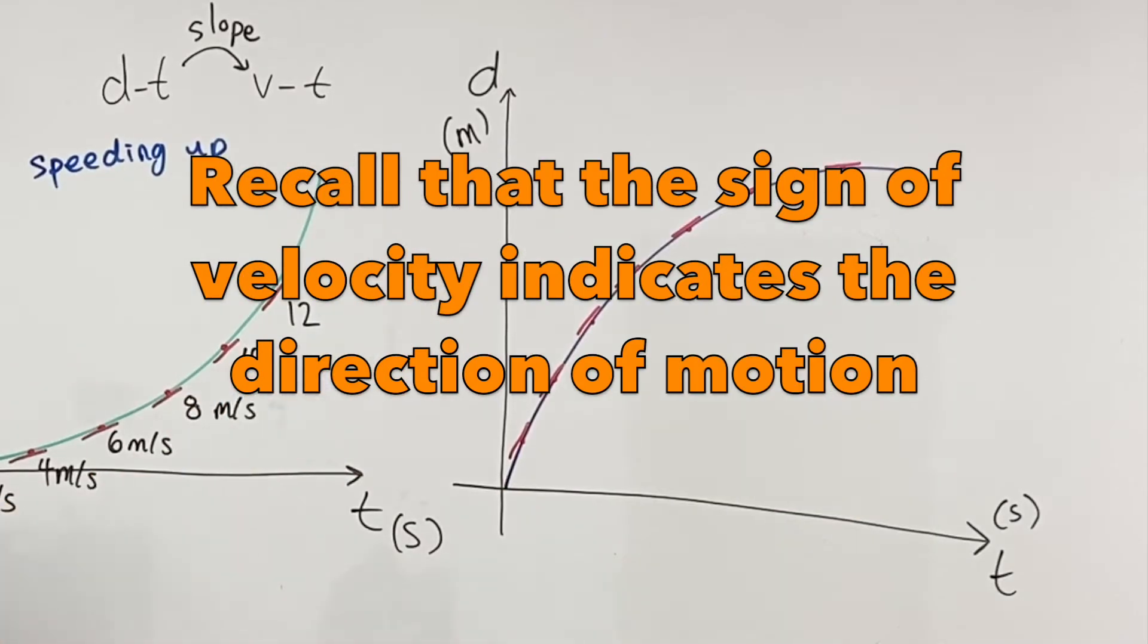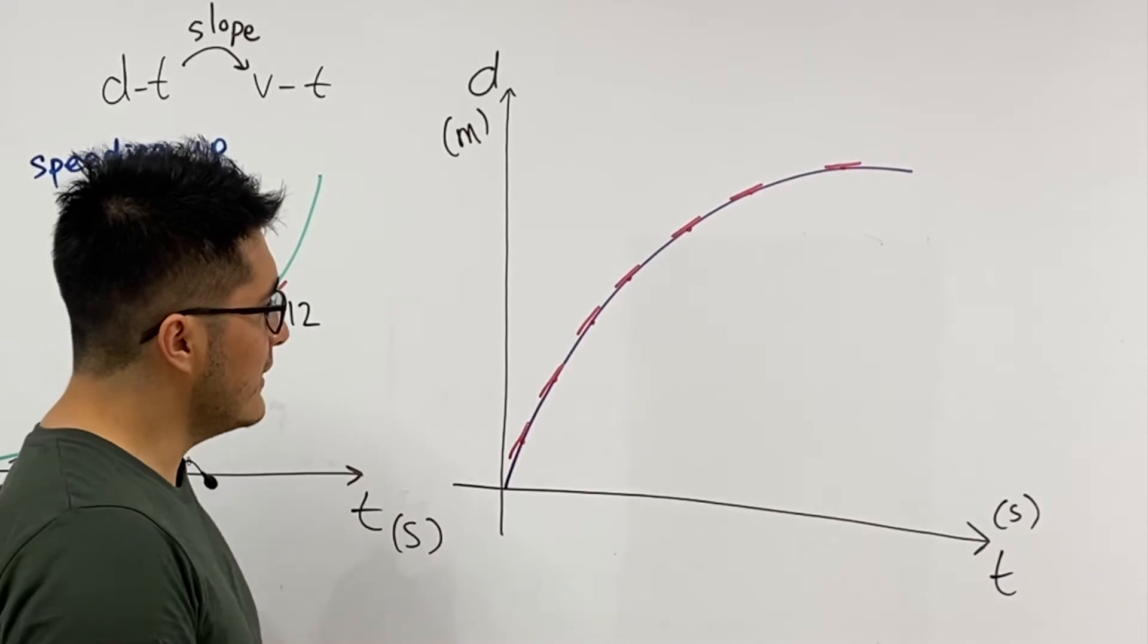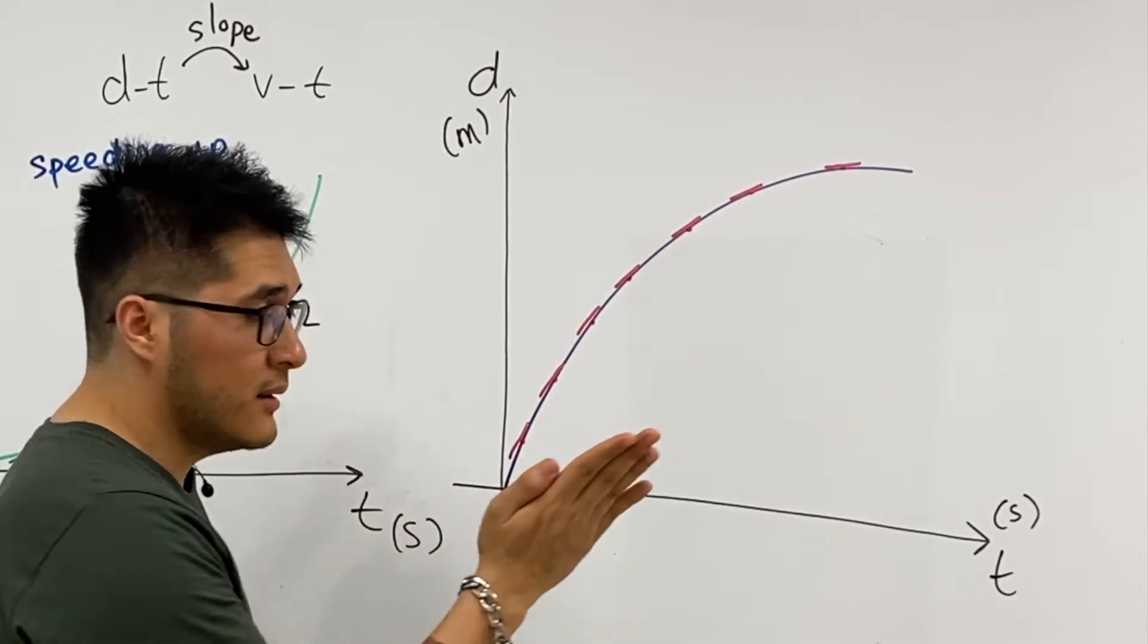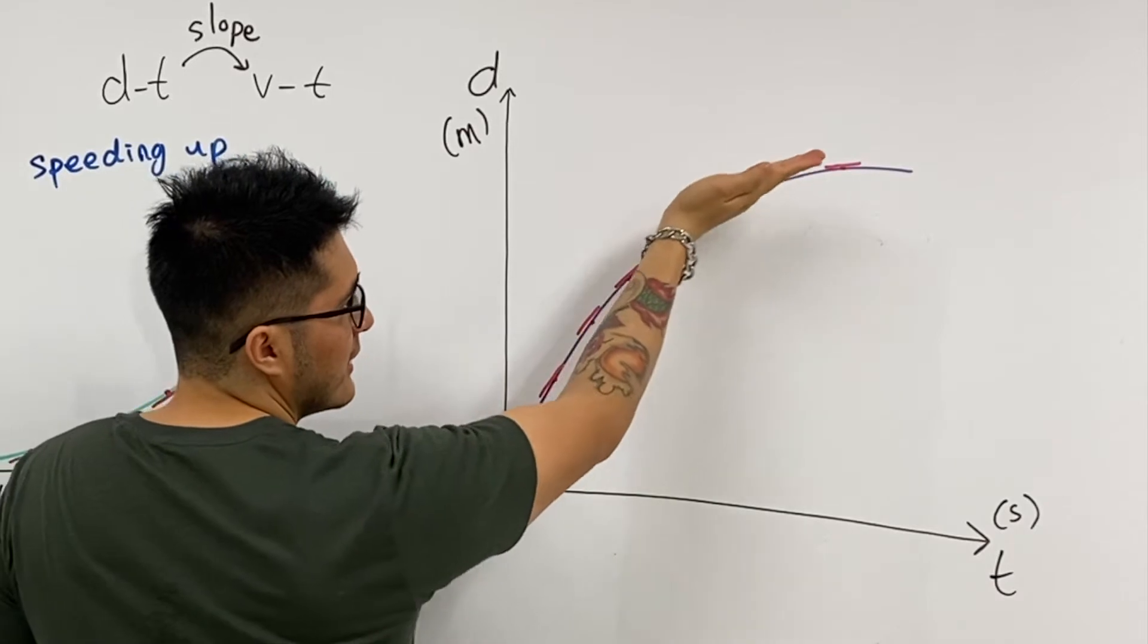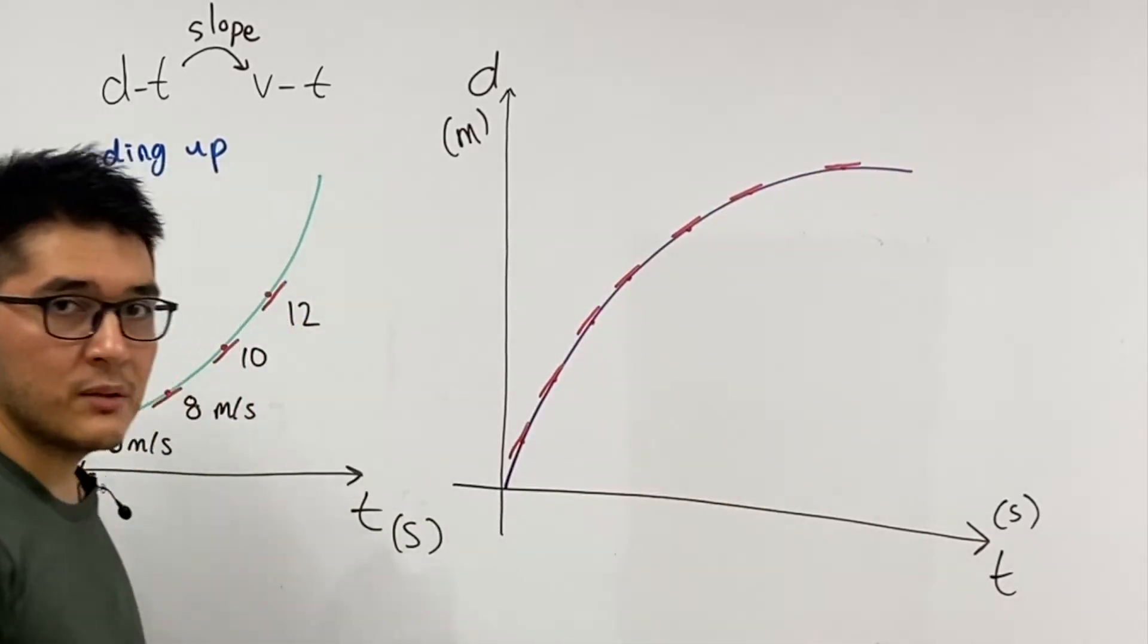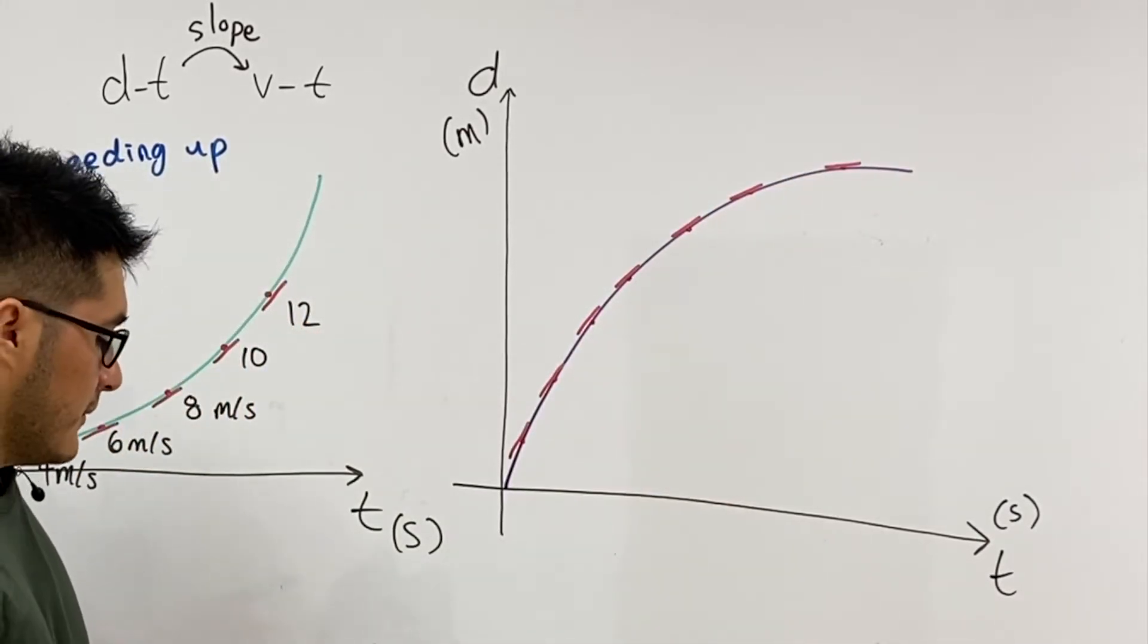We can do the same thing for the second one here, and in this case, we can just look at the trend, and notice that the tangent lines are getting less and less and less steep, so we can confidently say, okay, slowing down.